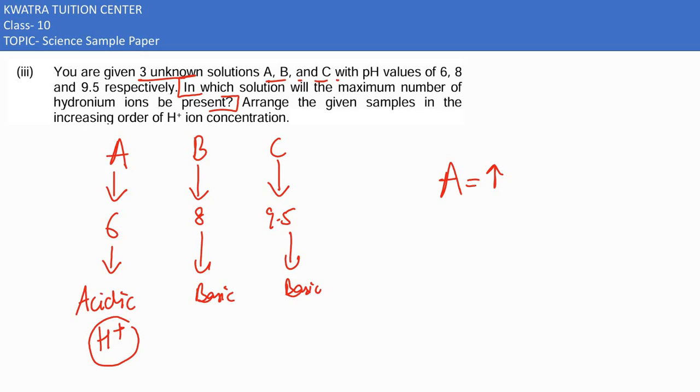Now they have said arrange the given samples in the increasing order of H+ ion concentration. The most acidic would have the most H+ ions.